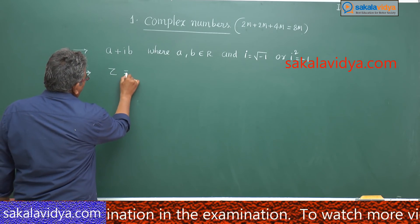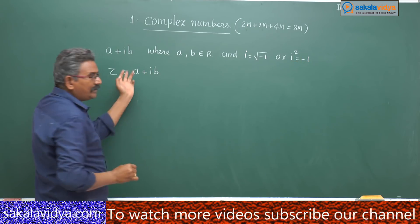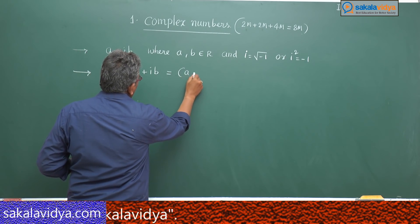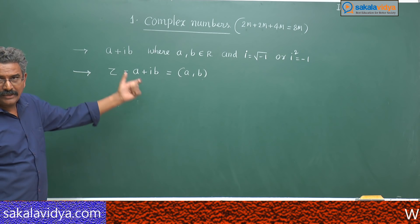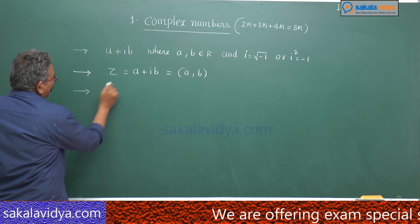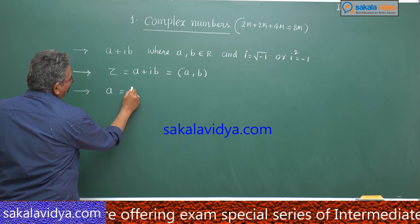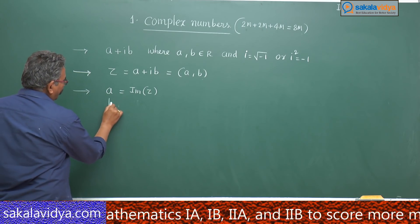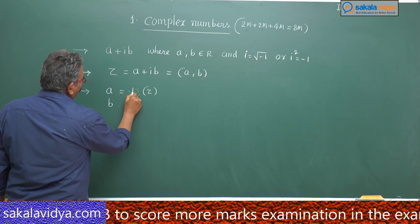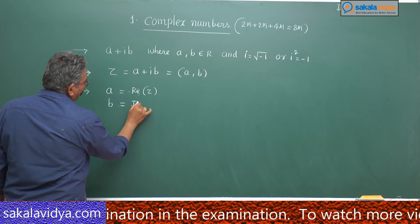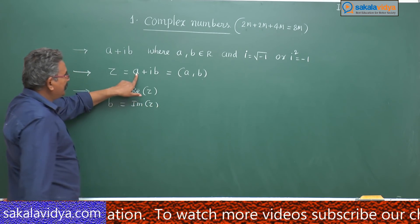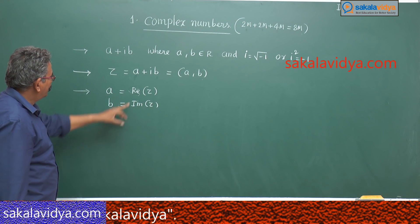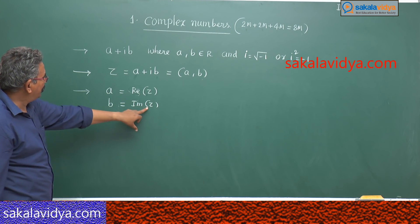We can write z = a + ib, and it is also written as an ordered pair (a, b). Here, a is the real part of z, and b is the imaginary part of z. So real part of z is a, and imaginary part of z is b.